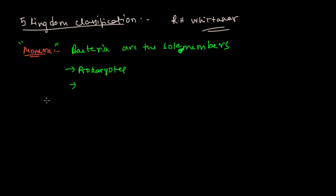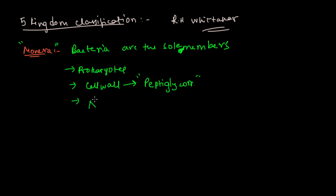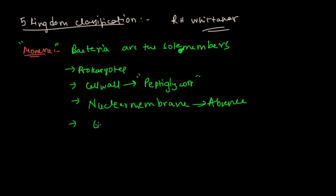Monera is the only kingdom made for prokaryotes — until then there was no distinction between prokaryotes and eukaryotes. They have the presence of a cell wall made up of peptidoglycan — in NCERT it is given as amino acids and peptides mixed together, which gives peptidoglycan. Regarding nuclear membrane: these are primitive organisms, so they do not have a nuclear membrane. They also have primitive cellular body organization.